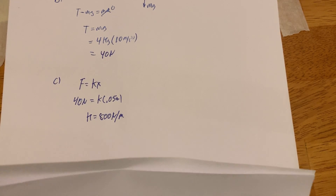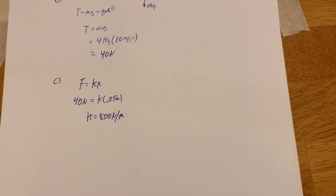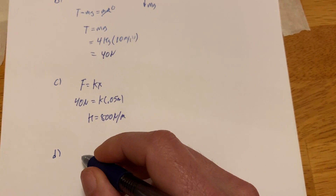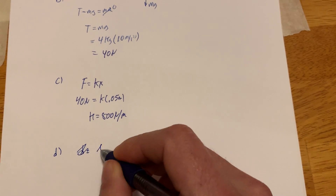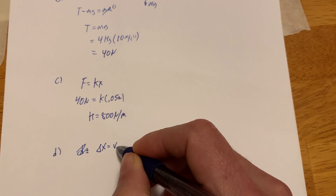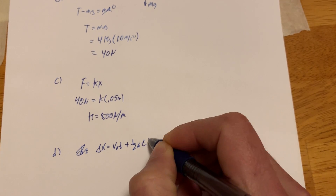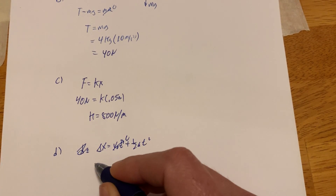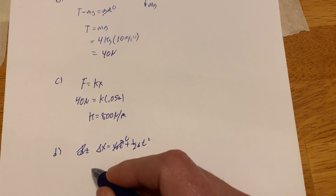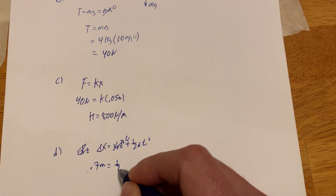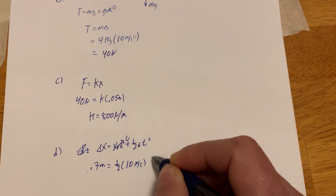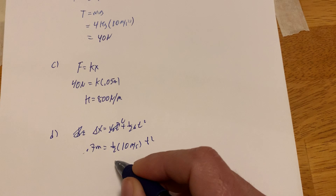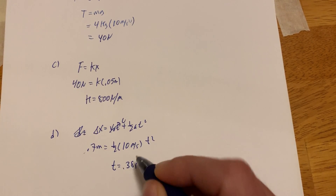Part D: the string is now cut — calculate the time it needs to hit the floor. Delta x equals v₀t plus ½at². We know it starts from rest, and we're 0.7 meters up. So: 0.7 equals ½ times 10 meters per second squared times t². Doing a little bit of math, I got a time of about 0.38 seconds.